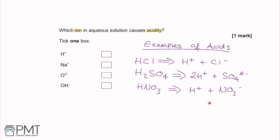Some examples of acids shown here are hydrochloric acid HCl, sulfuric acid H2SO4, and nitric acid HNO3. Breaking them into ions: HCl gives H+ and Cl−; H2SO4 gives two H+ and SO4 2− ; HNO3 gives H+ and NO3−. Hopefully you can spot that all these acids have H+ ions in them.